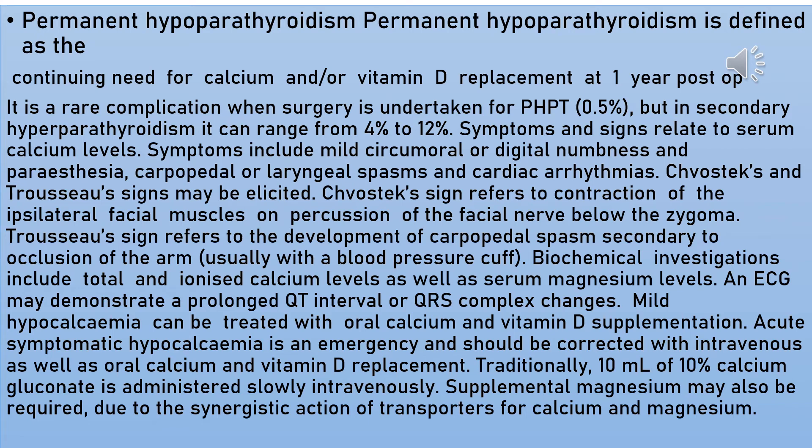Permanent hypoparathyroidism represents one of the most serious complications of parathyroidectomy. It is defined as a continuing need for calcium and/or vitamin D replacement at one year post-operatively. It is a rare complication in primary hyperparathyroidism — only 0.5% — while in secondary hyperparathyroidism it can range from 4 to 12%. Symptoms include mild circumoral or digital numbness and paresthesia, carpopedal or laryngeal spasm, and cardiac arrhythmia. Chvostek's sign refers to contraction of the ipsilateral facial muscle on percussion of the facial nerve below the zygoma.